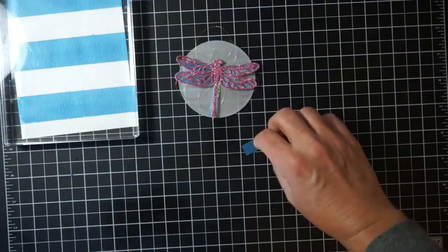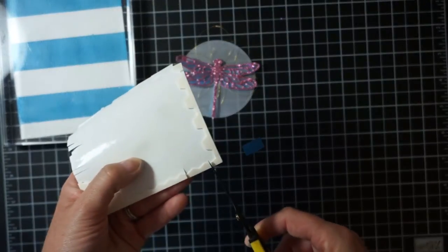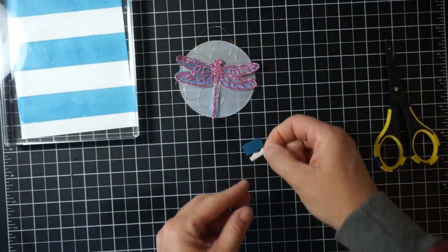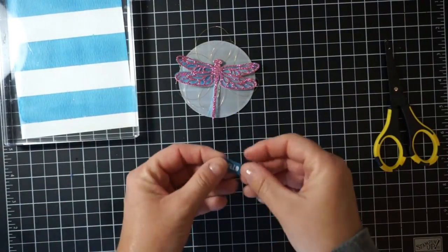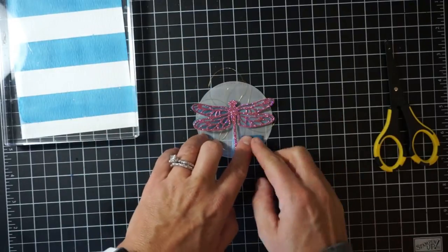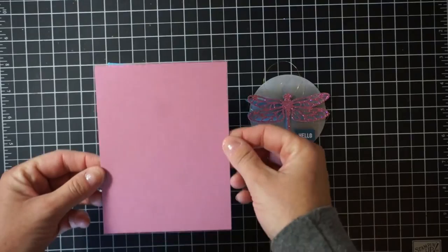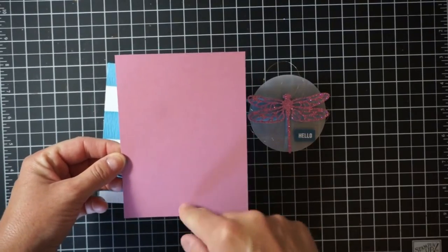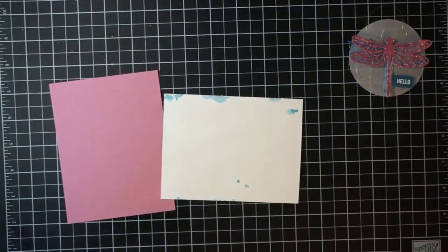So I also white heat embossed this hello sentiment. This hello sentiment is from the thoughtful banner stamp set and I just stamped that on a piece of dapper denim in Versamark ink, added white embossing powder and then heat set it and then I'm going to pop this up onto my focal point here with another piece of that foam dimension.